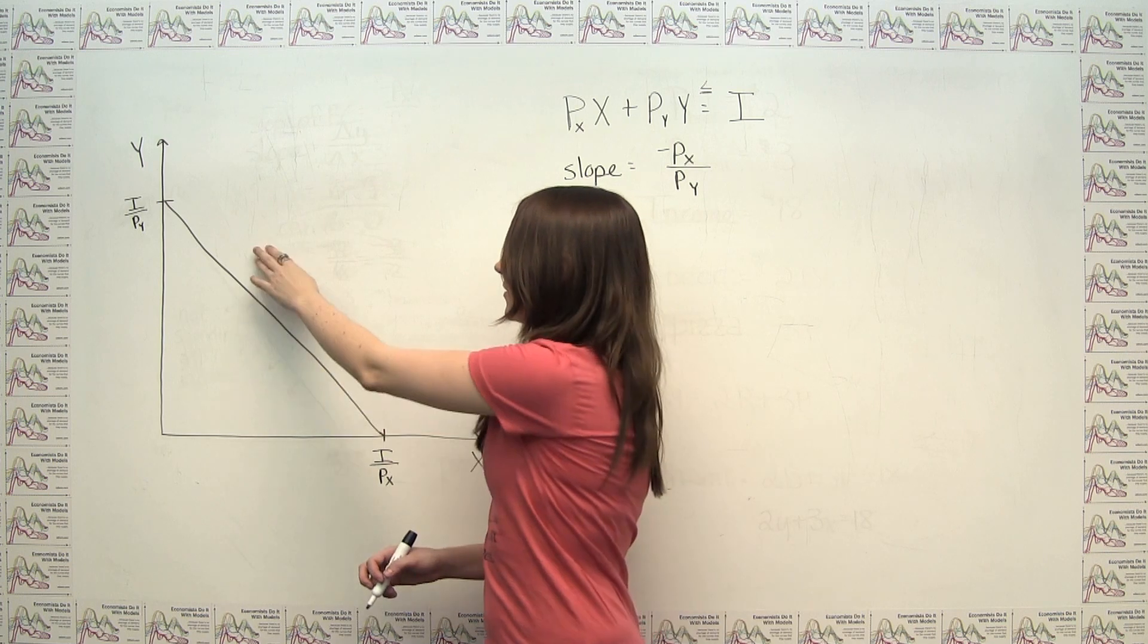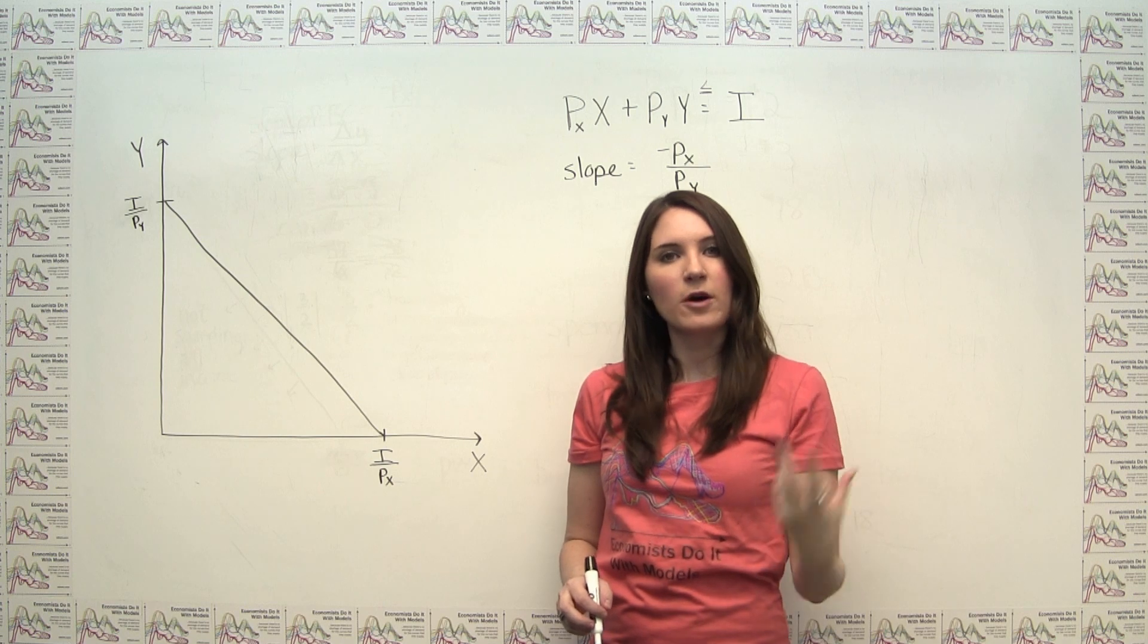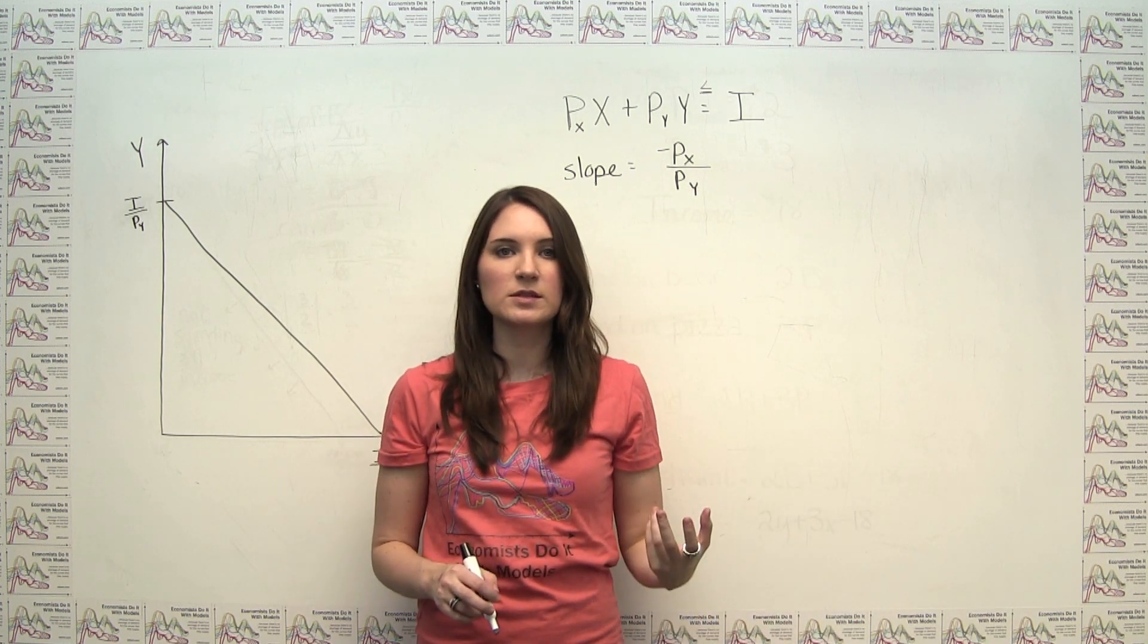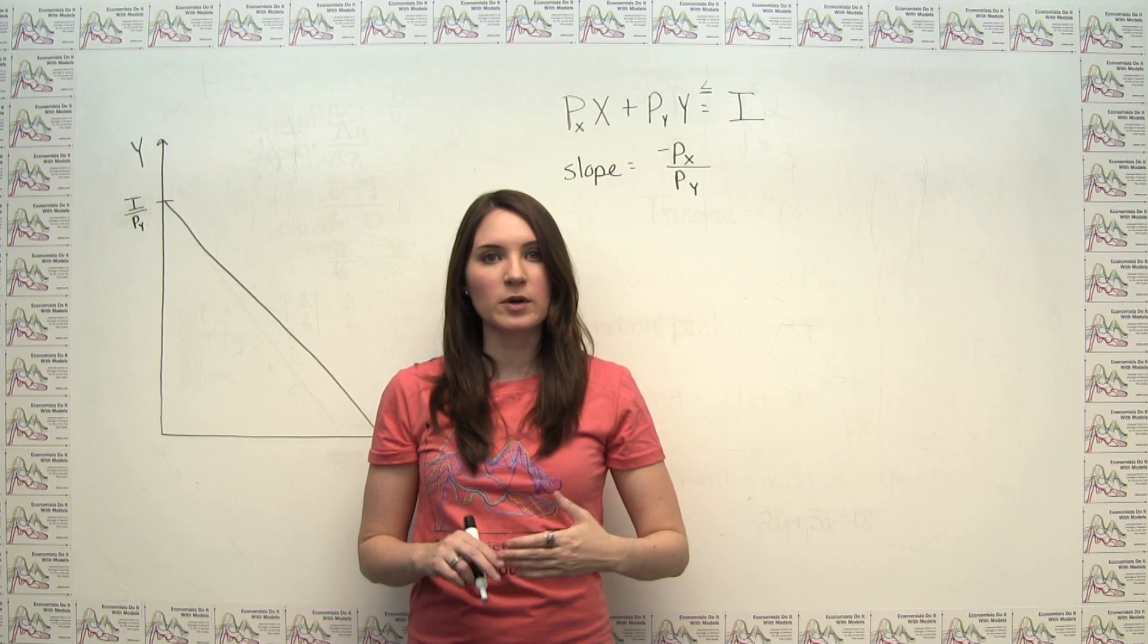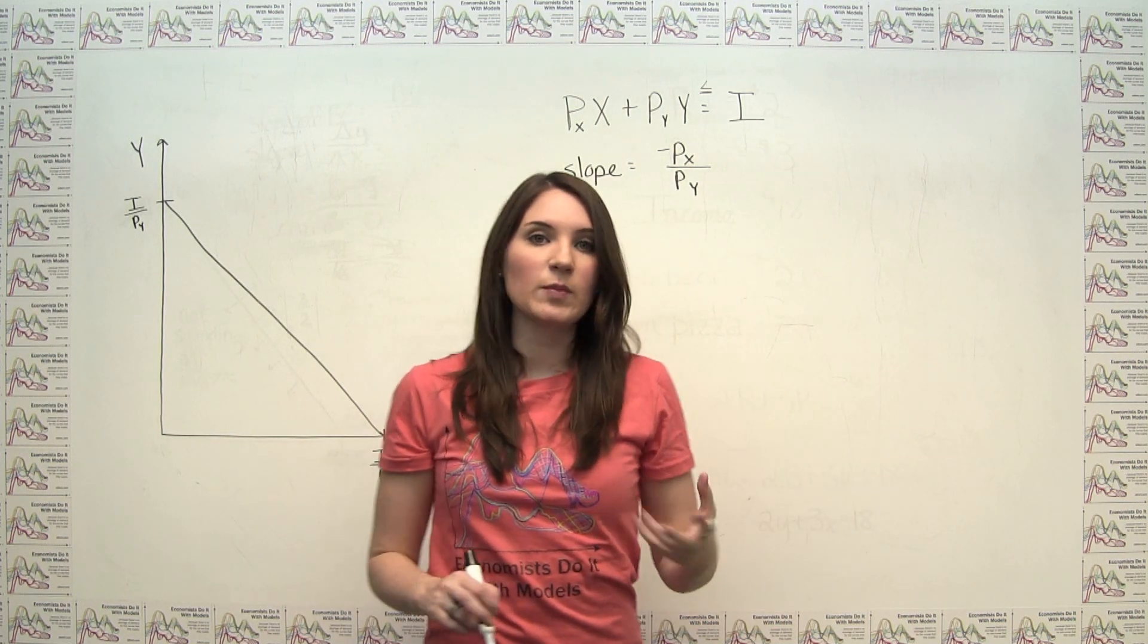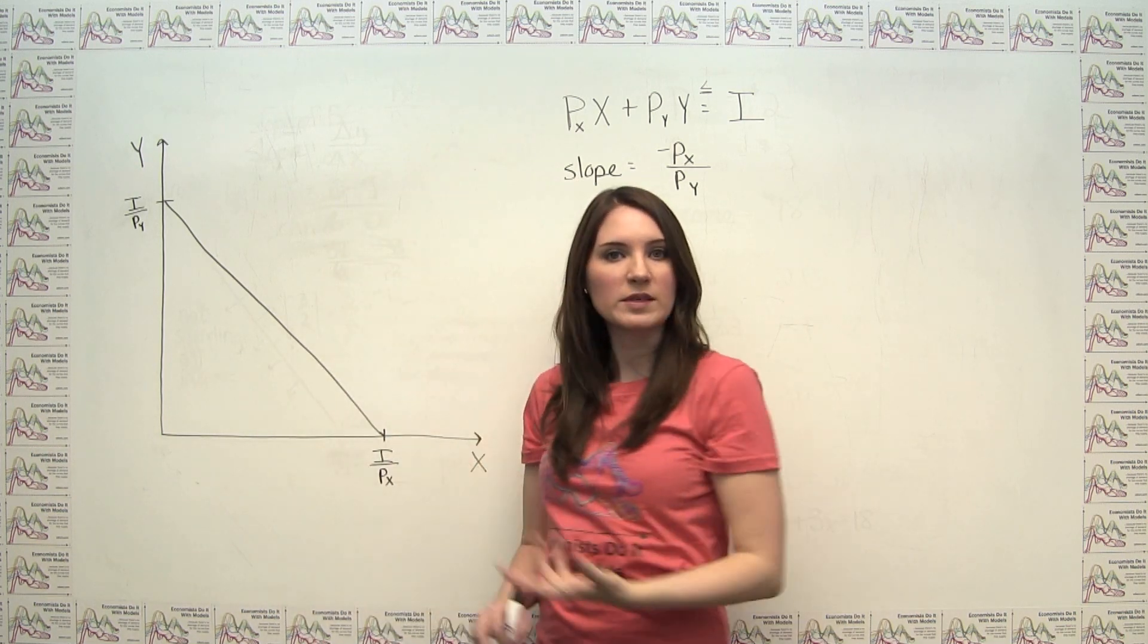When we have very straightforward budget constraints, meaning that we don't have any sort of volume discounts, we don't have any sort of buy three, get one free situations, we just have very straightforward unit prices for the items, we can think of our budget constraint using exactly this simple framework that we see here.